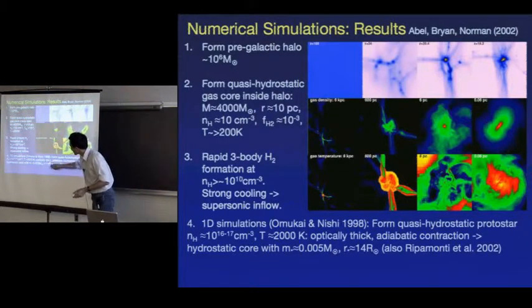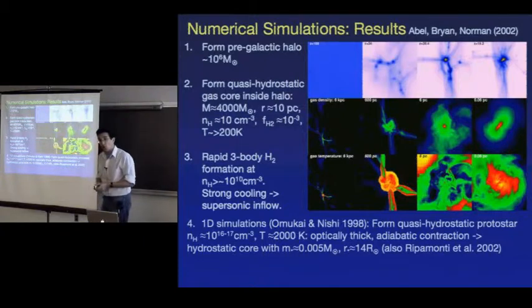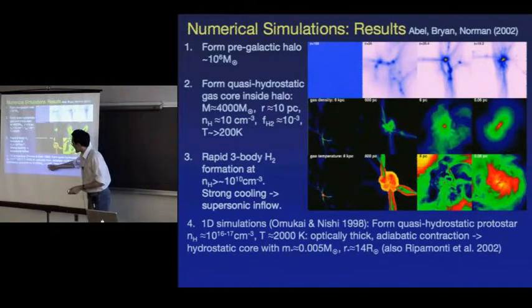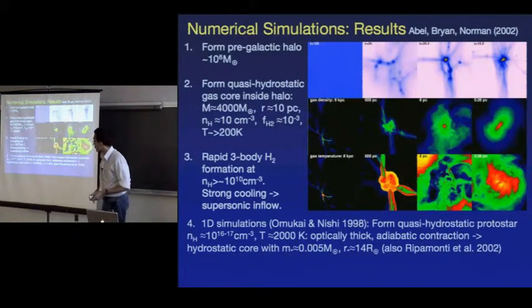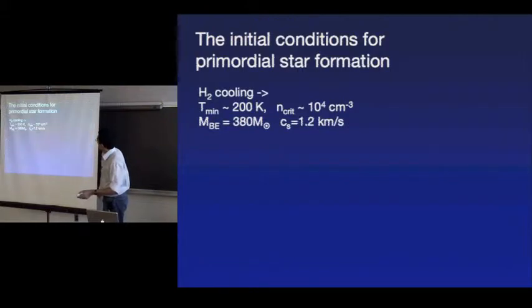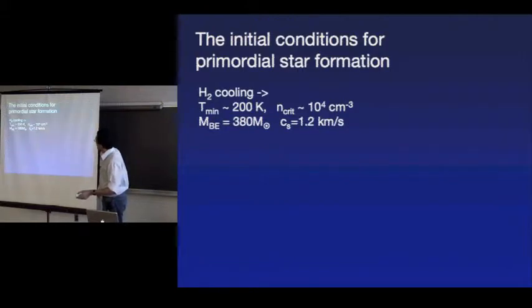An initial estimate of the size of the star when it forms has been claimed to be about 10–14 solar radii or so.